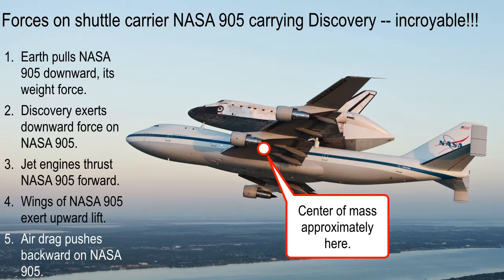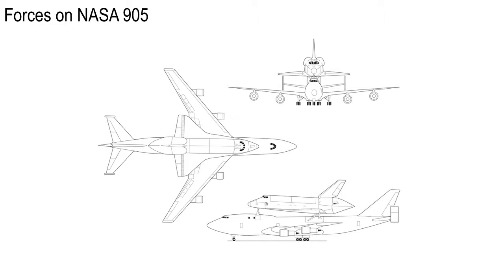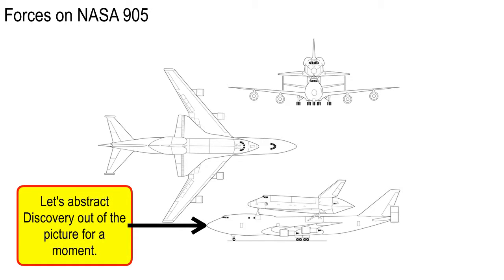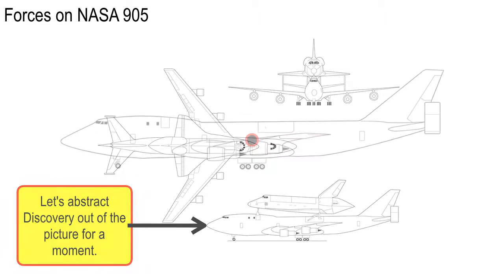Here's the approximate location of the center of mass. What we're going to do is try to draw in the force vectors as arrows with the tails of each force vector at the center of mass. We're going to take this side view and abstract Discovery out of the picture just so we can focus on the shuttle carrier, the big 747.